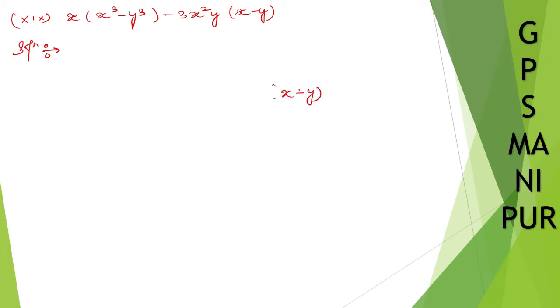x minus y whole cube, it will be x cube minus y cube minus 3xy x minus y. The formula is like this. So you can write down x cube minus y cube. Take everything this side. So it will be x minus y whole cube minus 3xy will become plus 3xy x minus y. So write this formula here.